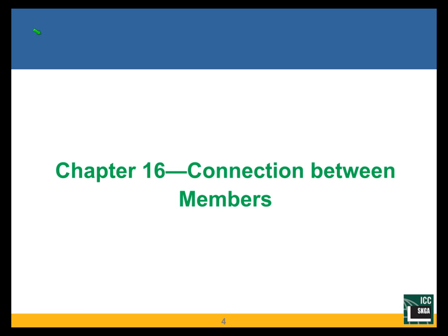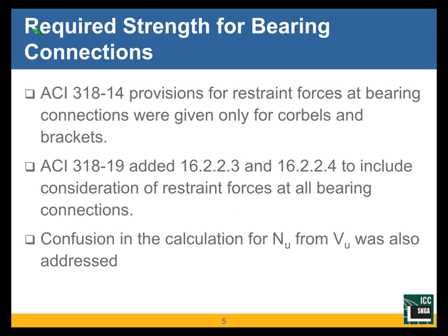Chapter 16 is titled Connection Between Members. ACI 318-15 provisions for restraint forces and bearing connections were given only for corbels and brackets. 318-19 has added two sections — numbered 16.2.2.3 and 16.2.2.4 — in order to include consideration of restraint forces at all bearing connections, not just brackets and corbels.